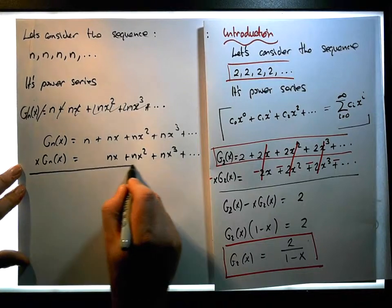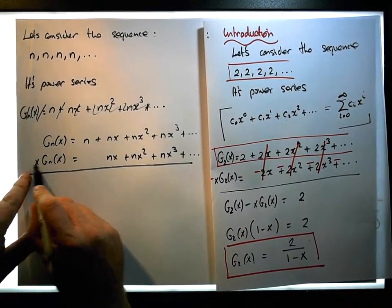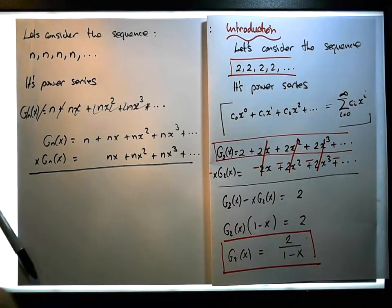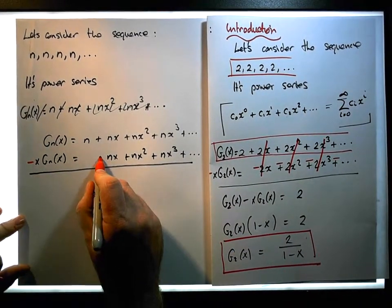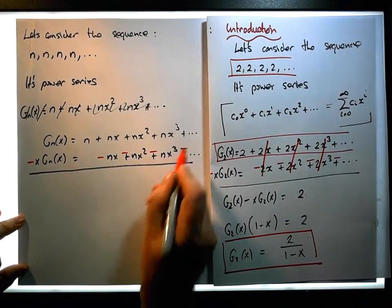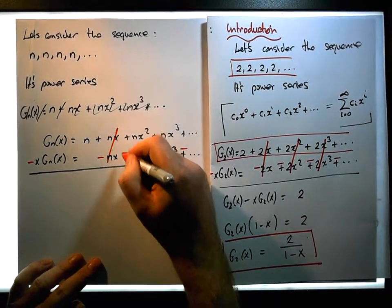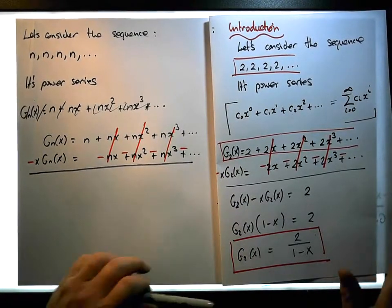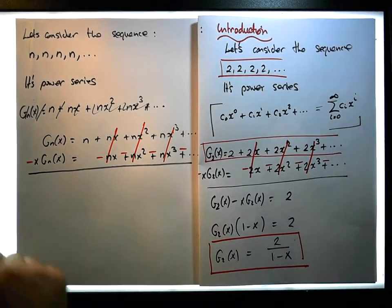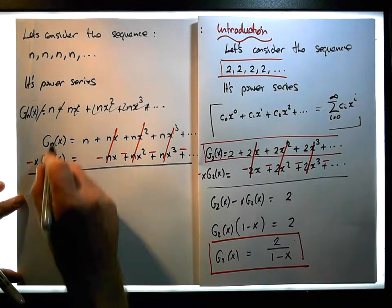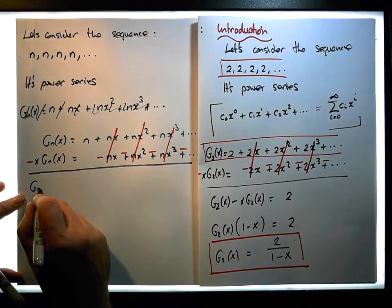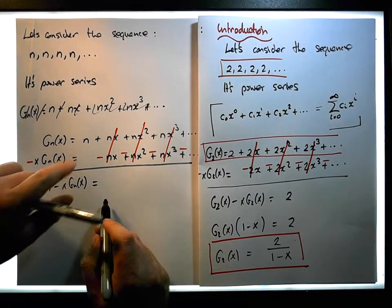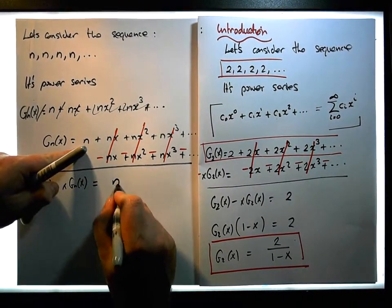What we're going to do is take away this second series from the first series — multiply across by minus one, so this becomes all negative. We see that they cancel, they cancel, and everything telescopically cancels all the way down to infinity. So effectively what we now have is g_n(x) minus x times g_n(x), which is equal to n — everything cancelled except for the n.